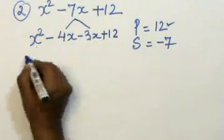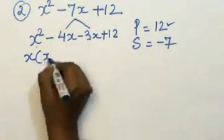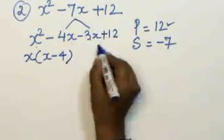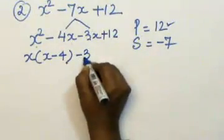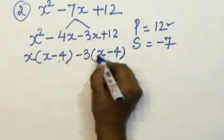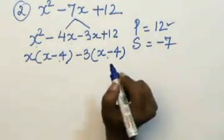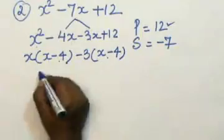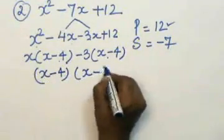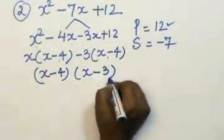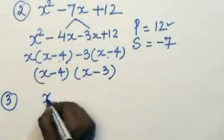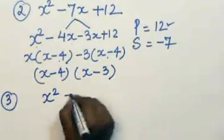From the first two terms, x is common, leaving x - 4. From the next two terms, -3 is common, leaving the same expression. So x - 4 is a common factor, and you are left with x - 3. The two factors are (x - 4) and (x - 3).